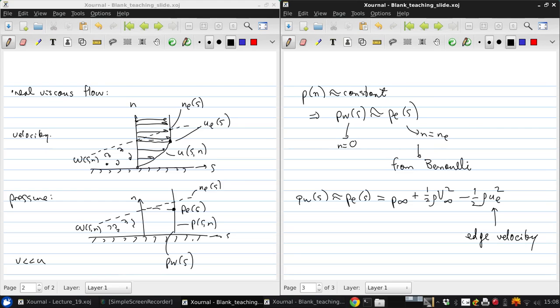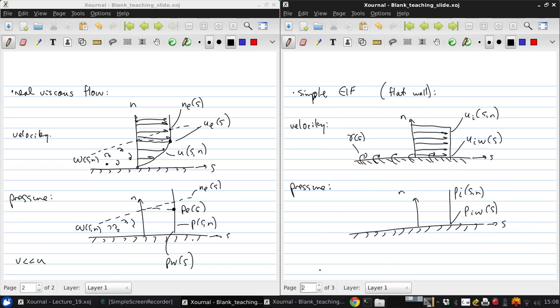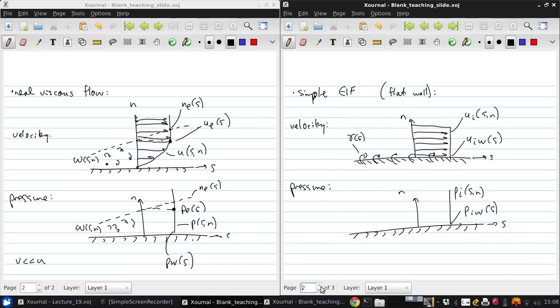So if the boundary layer, then, is very thin, the simple EIF is actually a good model. Because what we get is that U I at the wall of S is approximately the edge velocity.